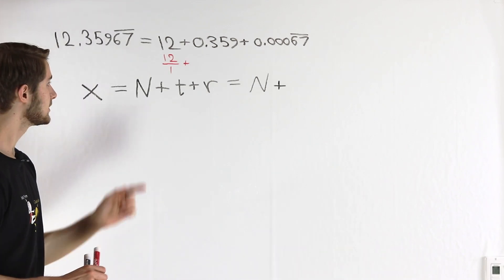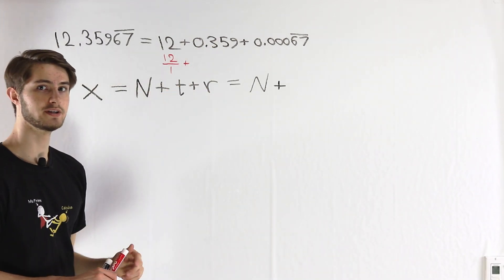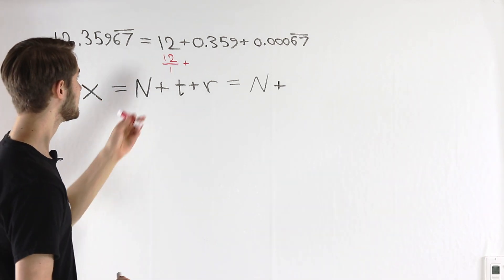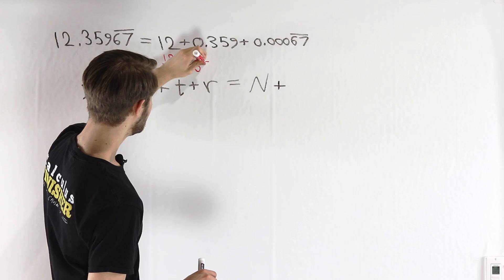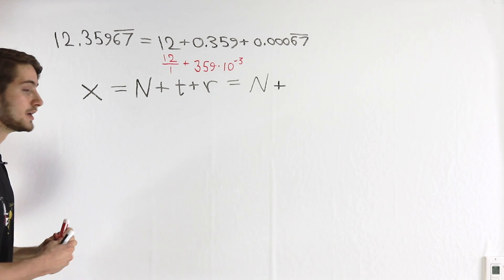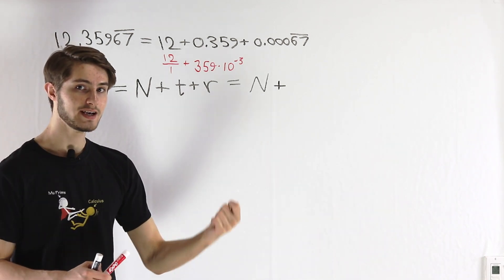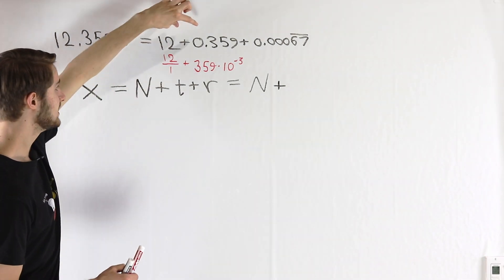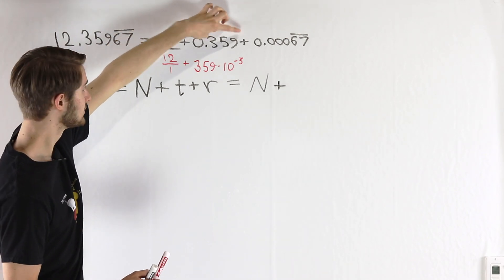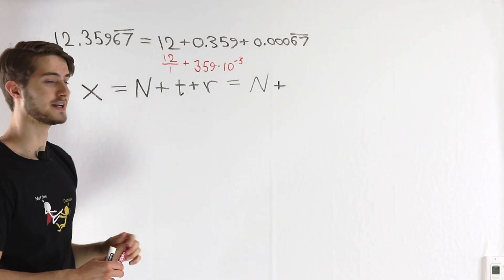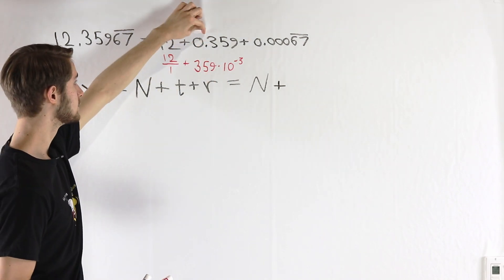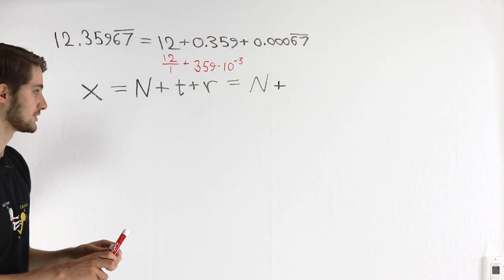Now when we take a look at this terminating decimal part 0.359, notice that we can write 0.359 as 359 times 10 to the negative 3. If we multiply by 10 to the negative 3, that has the effect of taking our number 359 and shifting the decimal place over three times, so we get 0.359 as the result. Each of these is a rational number, and therefore 0.359 must be rational as well.